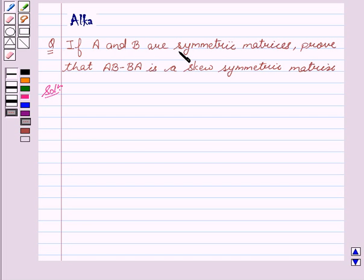Now our given question is, if A and B are symmetric matrices, prove that AB minus BA is a skew symmetric matrix.